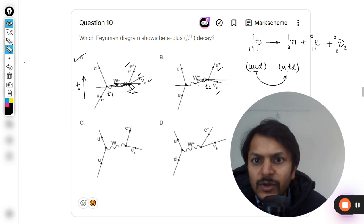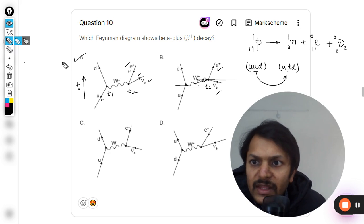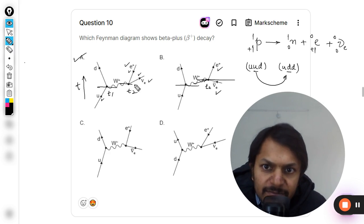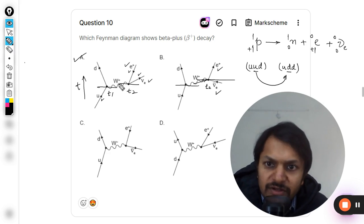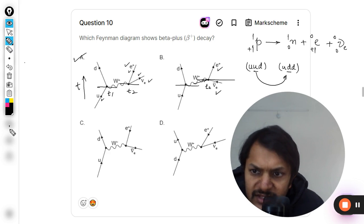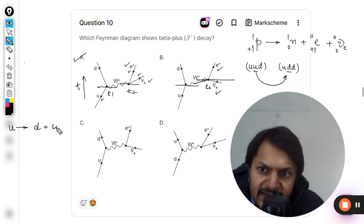Let me tell you this thing once again. So there are two timestamps and W positive is there. In the first case, u is getting divided into d and it is creating W plus boson, and W plus boson at t2 is getting converted into two parts.